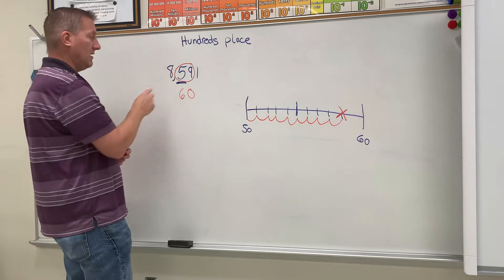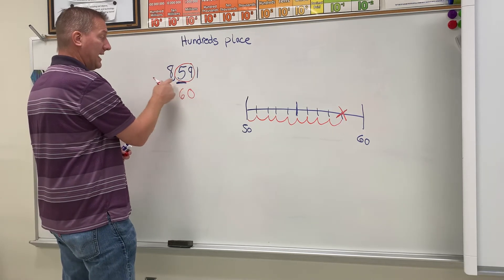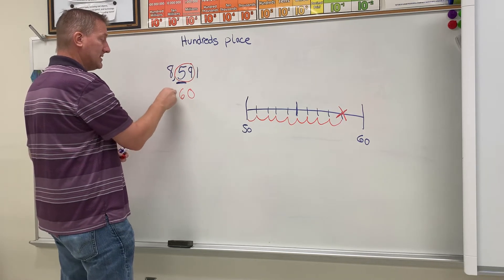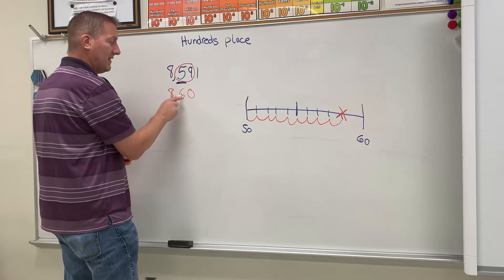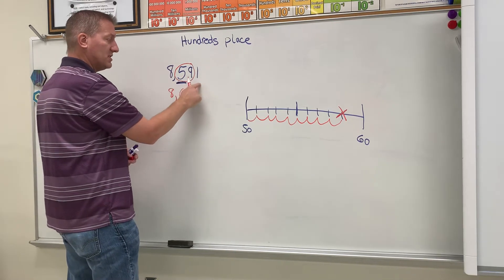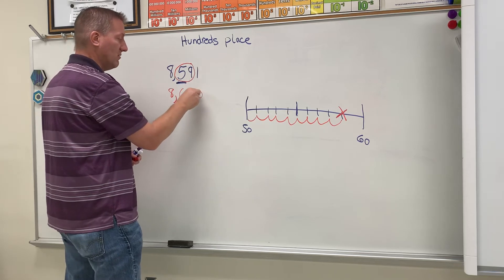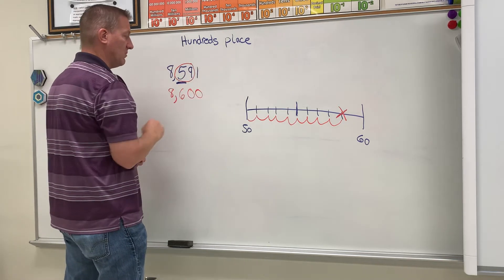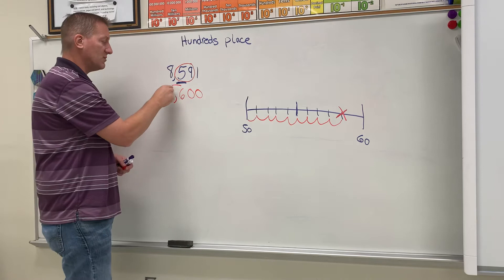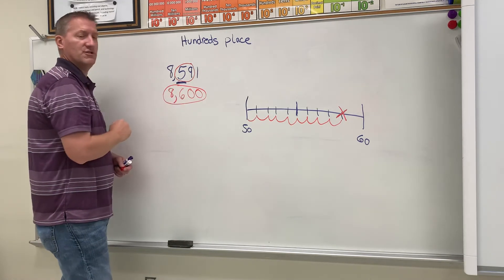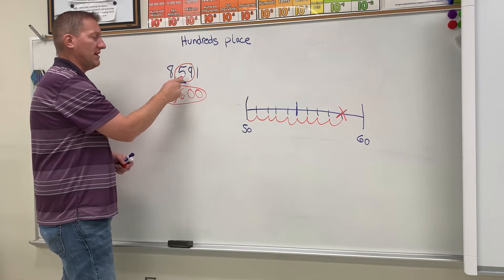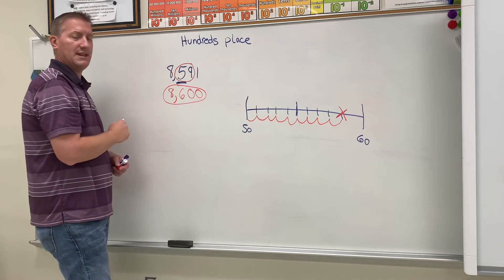And then the 8 would stay the same because you're not changing that at all. And then the rest, all the numbers to the right, would go to zero, which is just one digit, the ones place. So this would be your answer: 8,600. So 8,591 would round to 8,600, and that's how you get your answer.